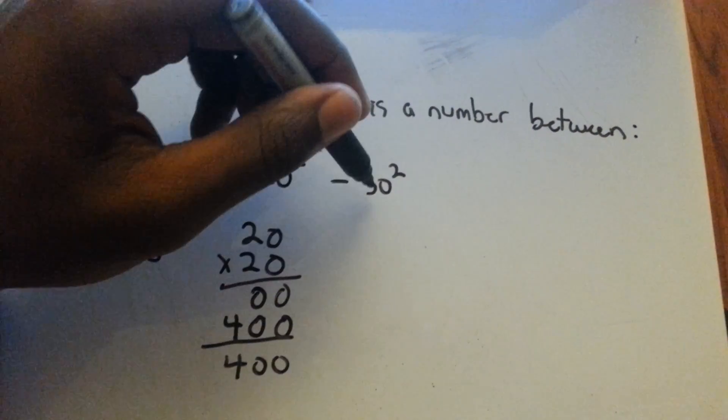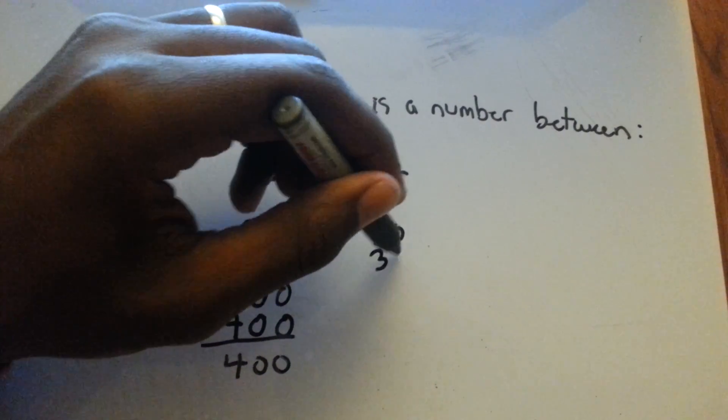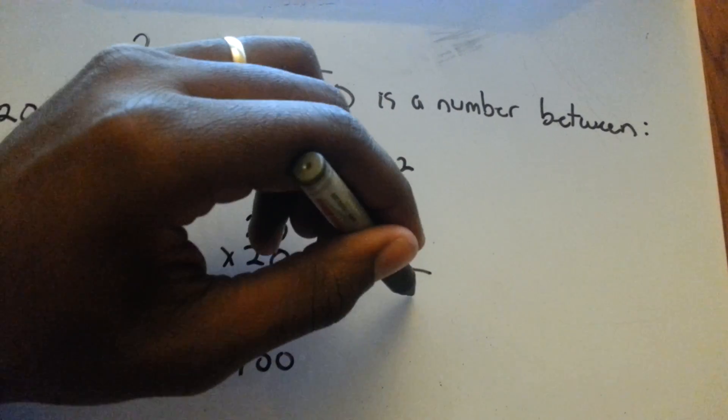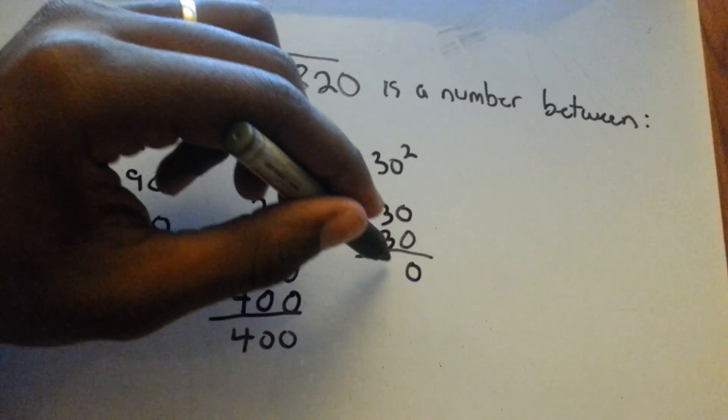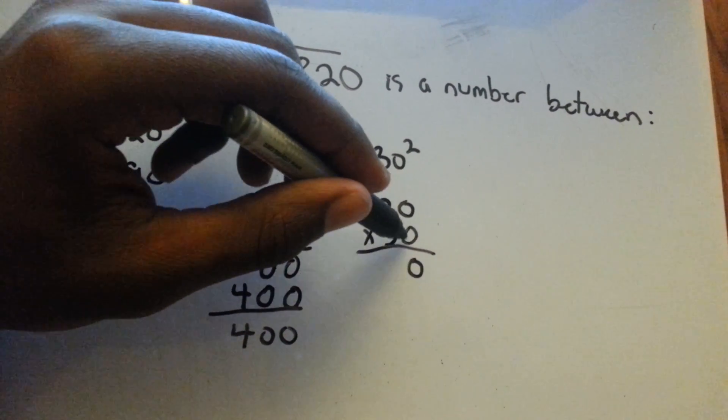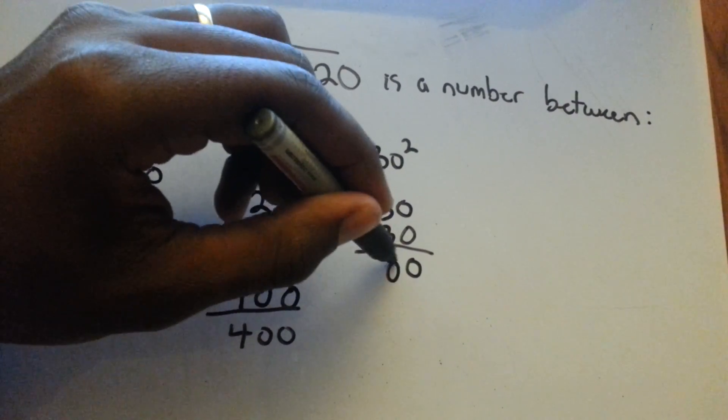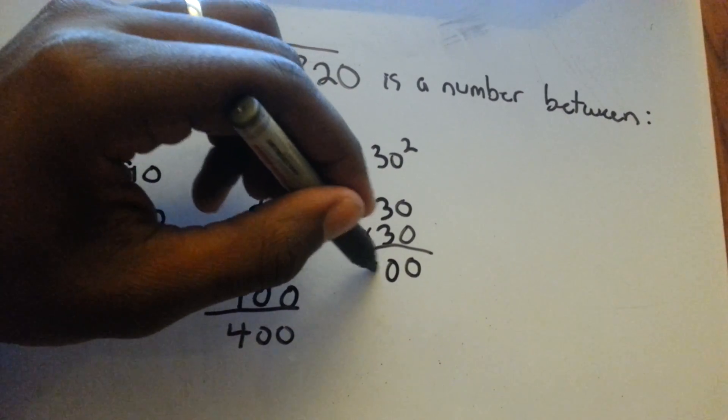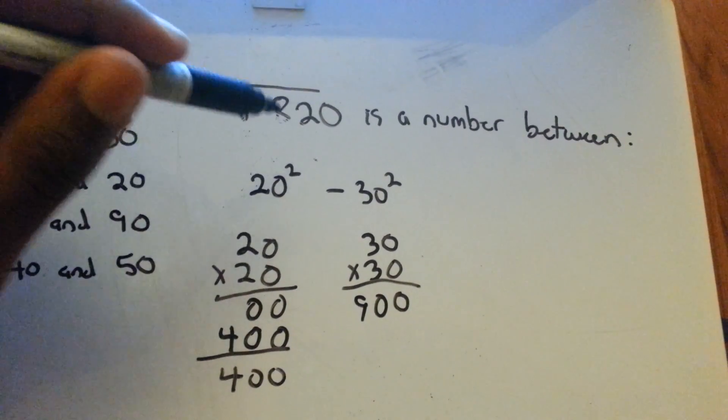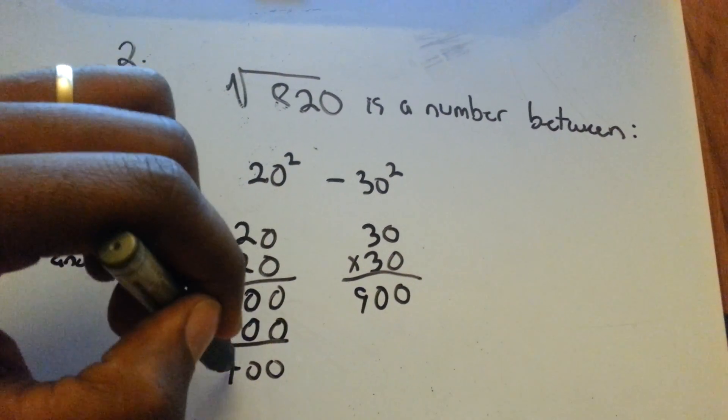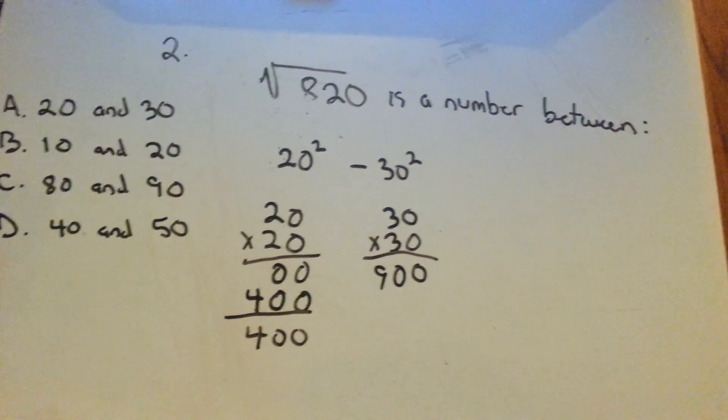30 squared - write it out - 30 times 30. I'm not going to go through every step, I'll just put a placeholder there for the 0, and then 3 times 3 is 900. So is 820 between 400 and 900? Yes. So we lucked out on that one.